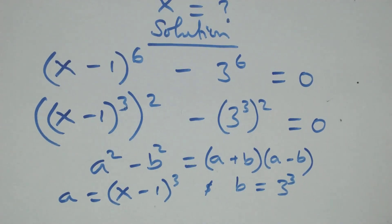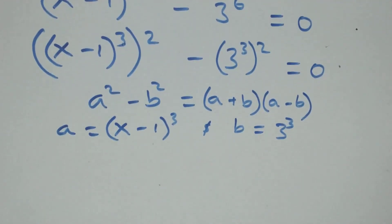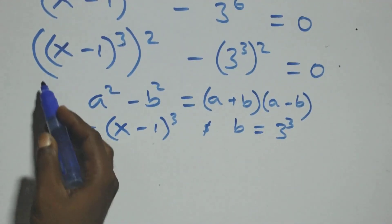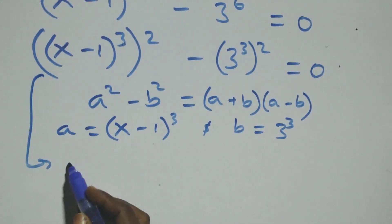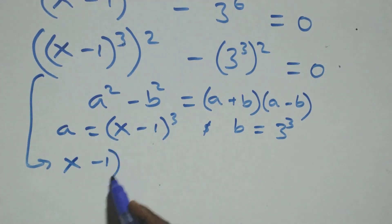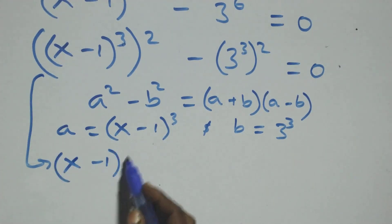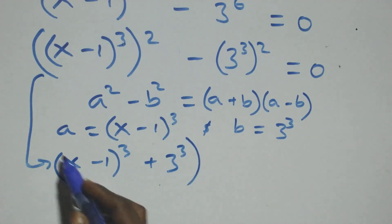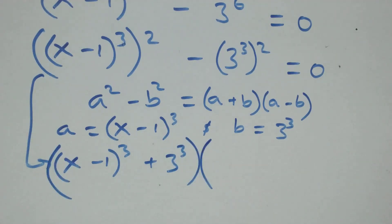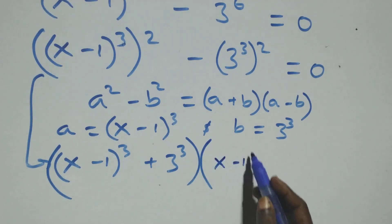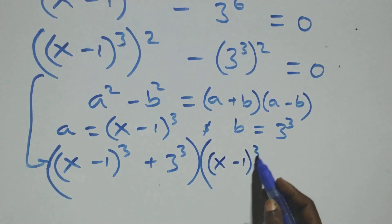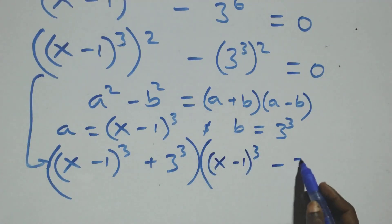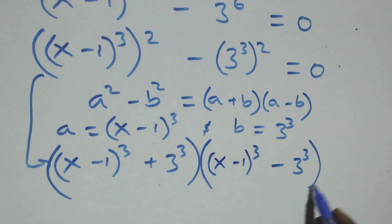Then what we have here becomes: x minus 1 raised to the power 3, plus 3 raised to the power 3, into brackets — open brackets — x minus 1 raised to the power 3, minus 3 raised to the power 3, equals to 0.